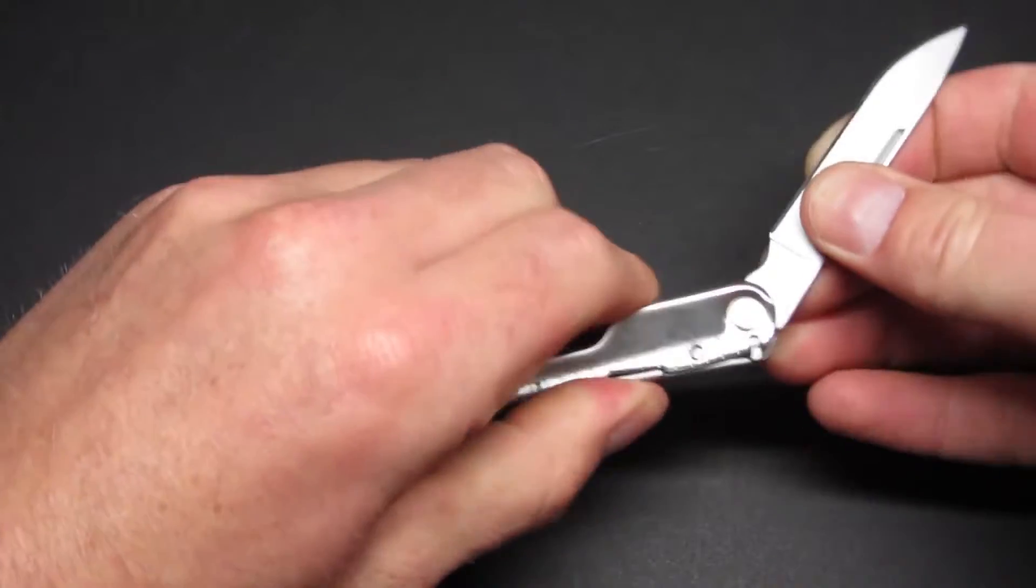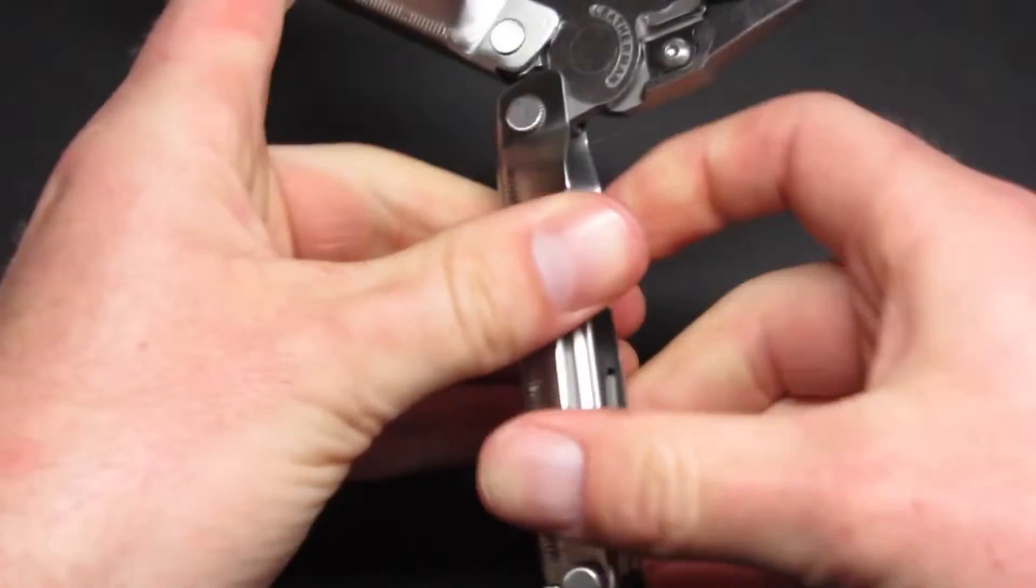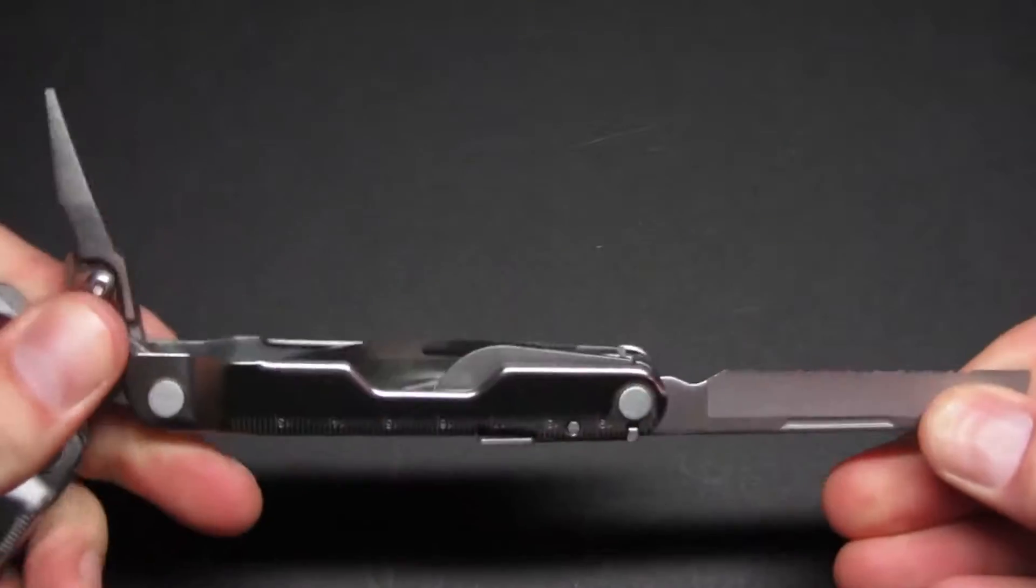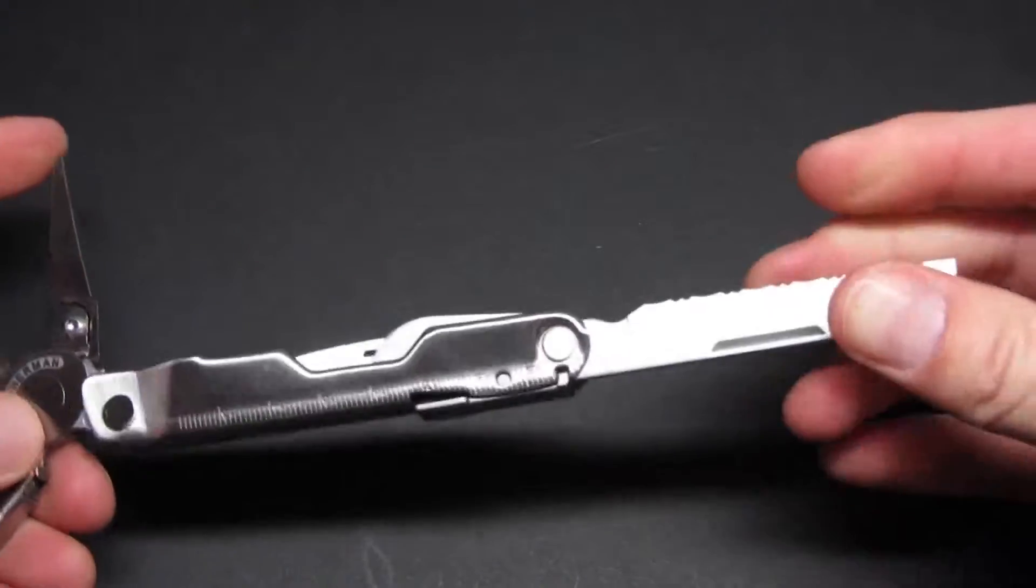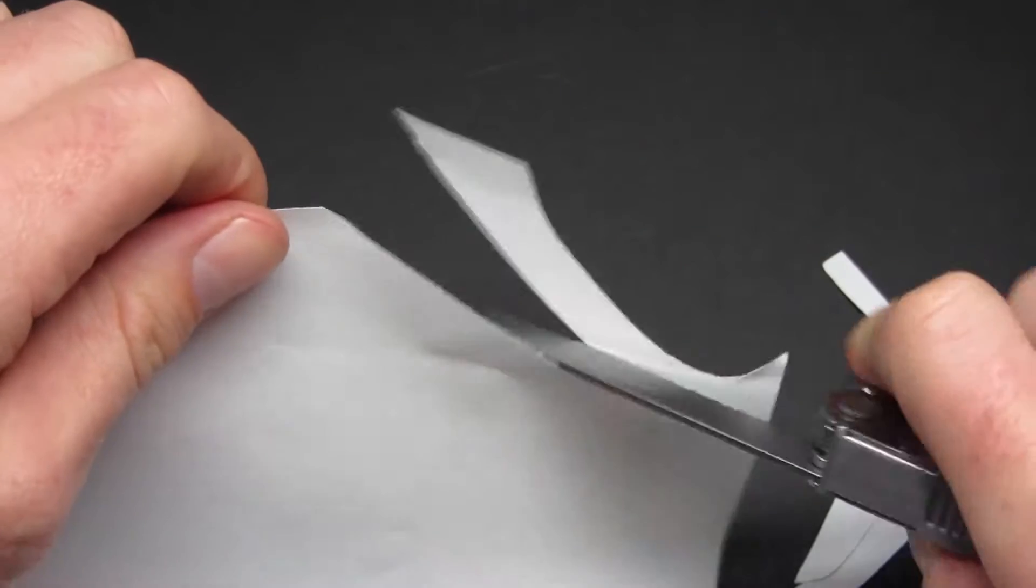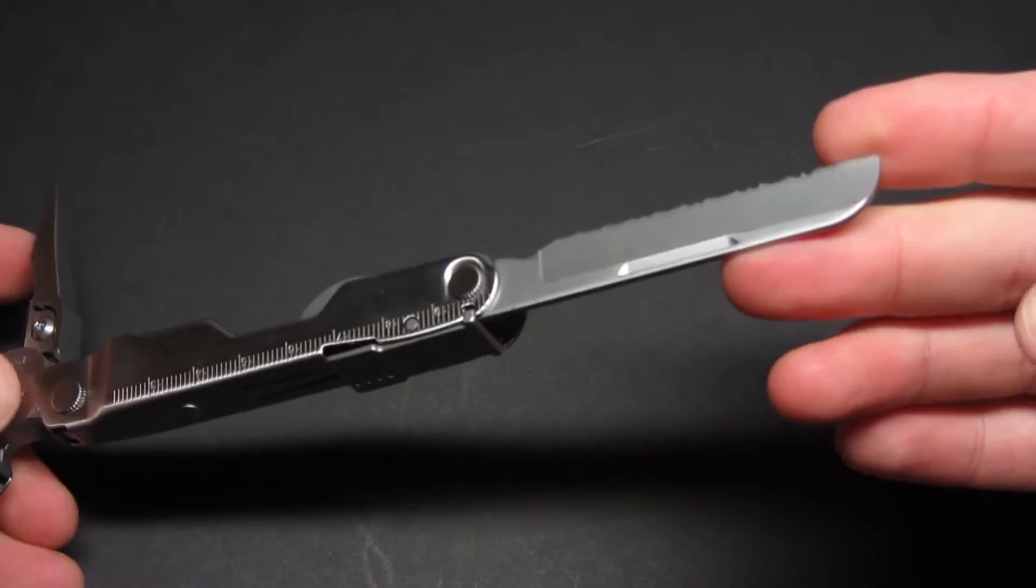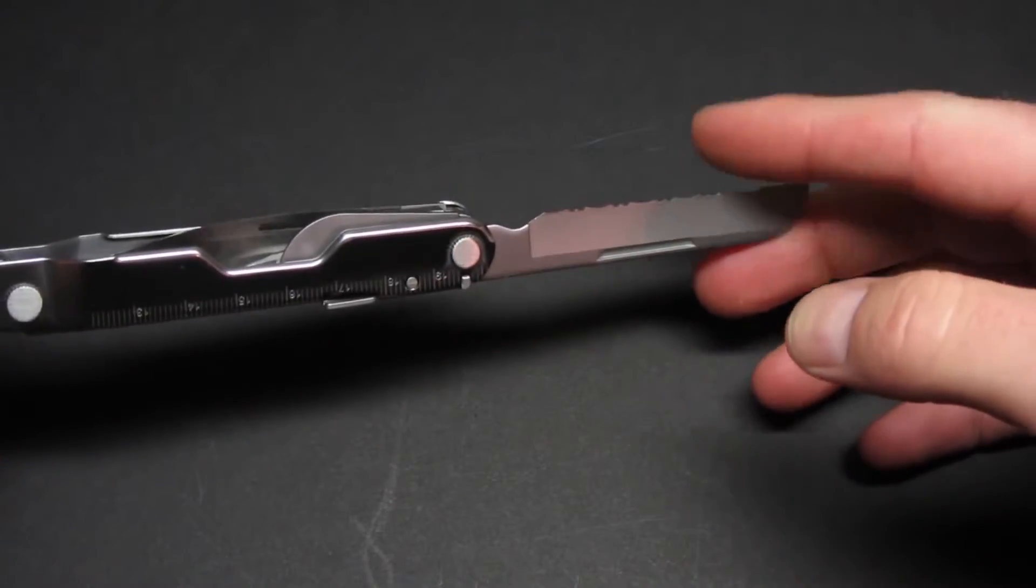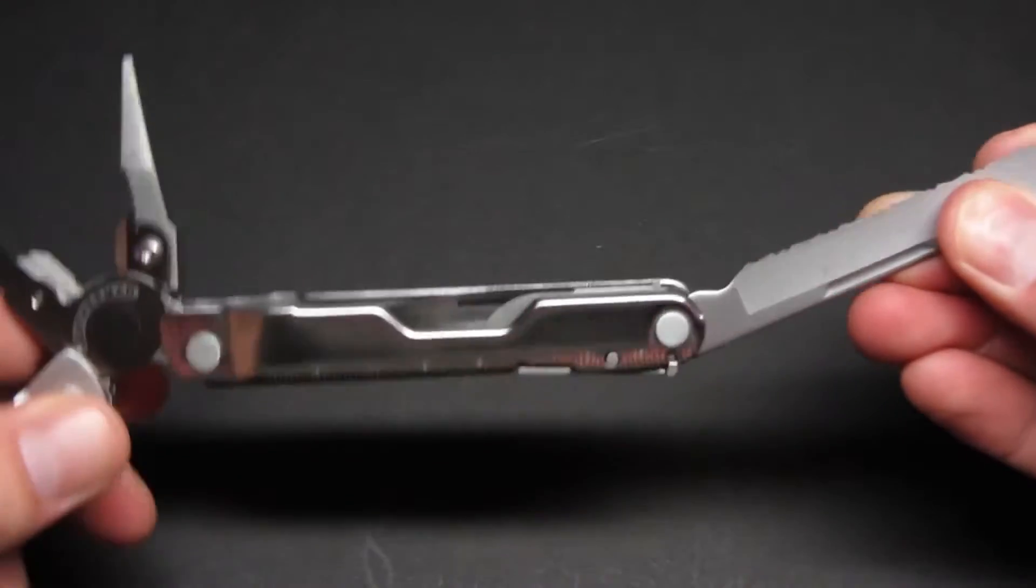You also have on the other side a serrated blade. I believe this is 440 HC as well. Everything on here is pretty much 440 HC. This is also paper-cutting sharp and I'll roll in a video of that. Really sharp. Again, I don't foresee myself using that, but for someone that might need a serrated blade, it's definitely sharp, can cut paper as well as some other things.